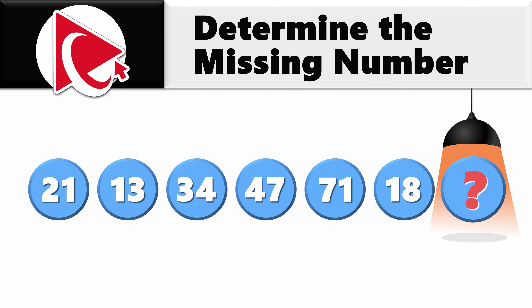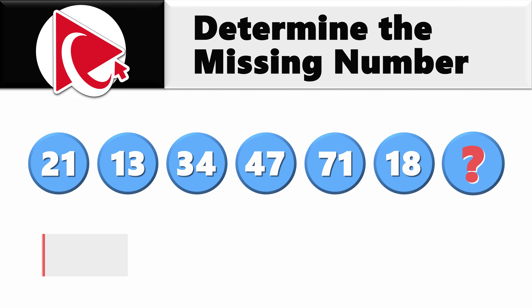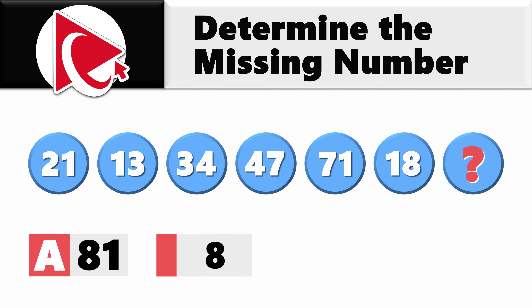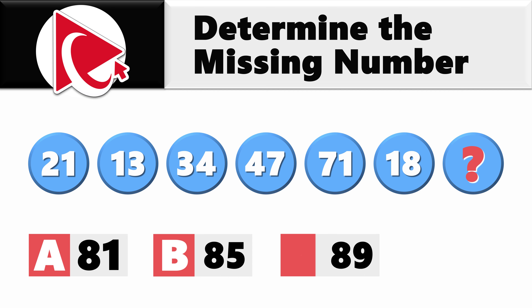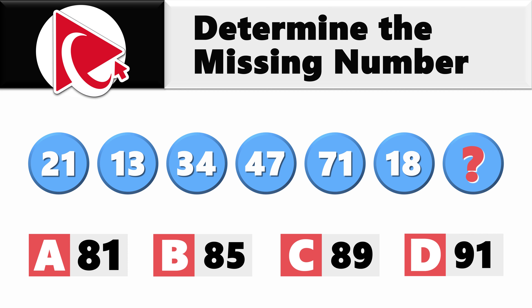Then comes the missing number, which you need to select out of four possible choices: choice A is 81, choice B is 85, choice C is 89, and last but not least, choice D is 91.